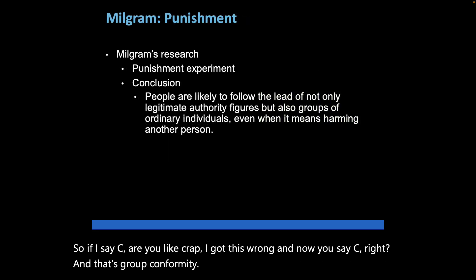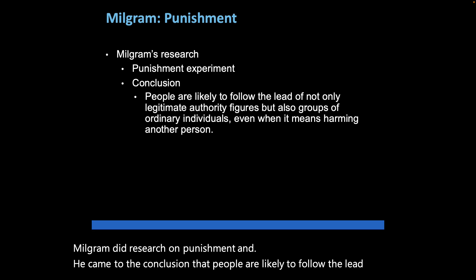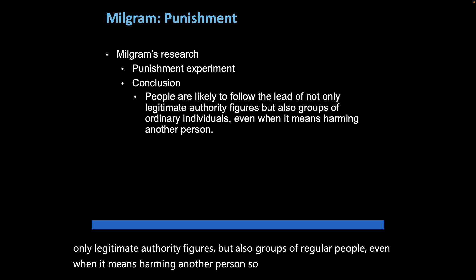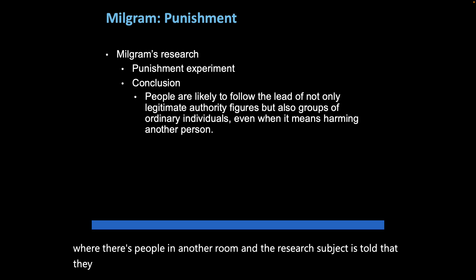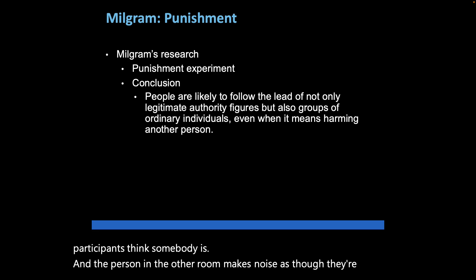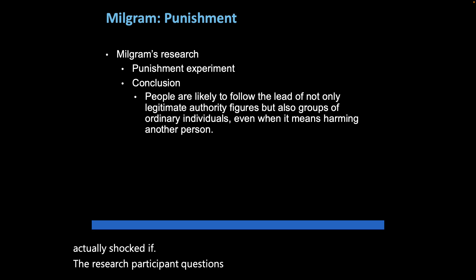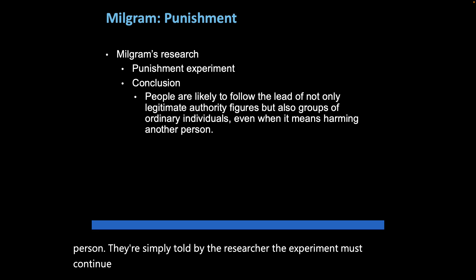Milgram did research on obedience and concluded that people are likely to follow the lead of not only legitimate authority figures but also groups of regular people, even when it means harming another person. In his experiment, a research subject was told to administer an electric shock to a person in another room who answered a question incorrectly. Nobody was actually being shocked, but participants thought they were. If they questioned whether to continue, the researcher simply said 'the experiment must continue.' It's surprising how many people complied.